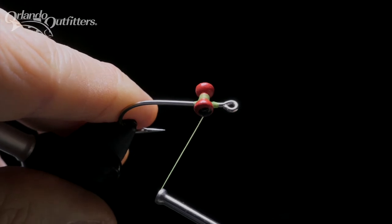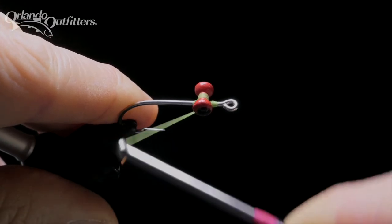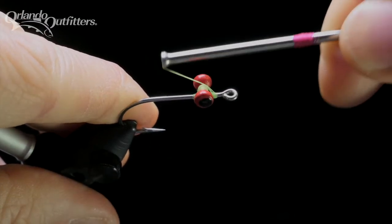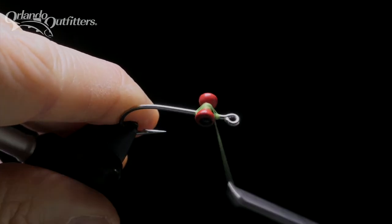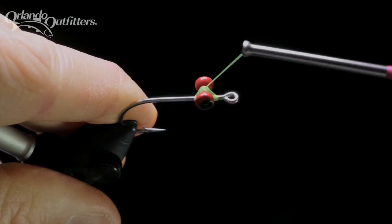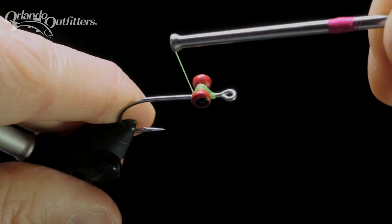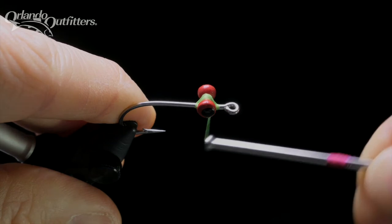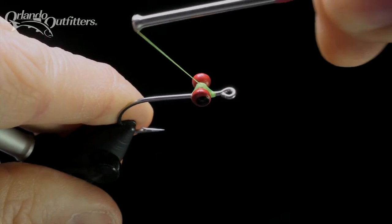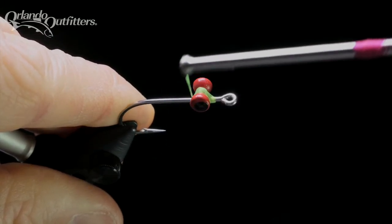The first type of wrap is the figure eight wrap. This is the same wrap used to get the eyes seated, but it is easier to see now that the eyes are in their final orientation. Cross over the eyes and around the hook shank from close right to far left. Bring the thread under and cross from close left to far right. This forms an X on top of the eyes and the figure eight pattern around the eyeballs.